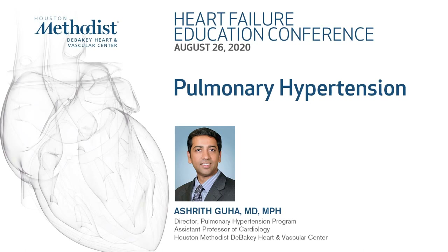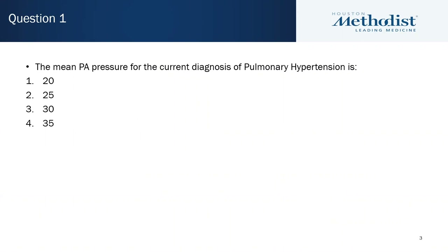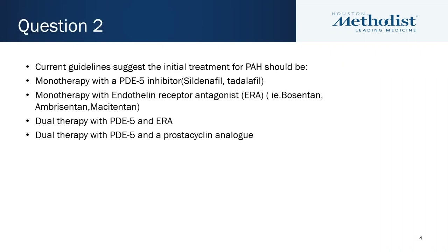We'll start off with a couple of pre-test questions. The first is a bit of a trick question: mean PA pressure for the current diagnosis of pulmonary hypertension — is it 20, 25, 30, or 35? And the second question: current guidelines suggest initial treatment for PAH should be monotherapy with a PDE5 inhibitor, monotherapy with an ERA, dual therapy with PDE5 and ERA, or dual therapy with PDE5 and a prostacycline analog?